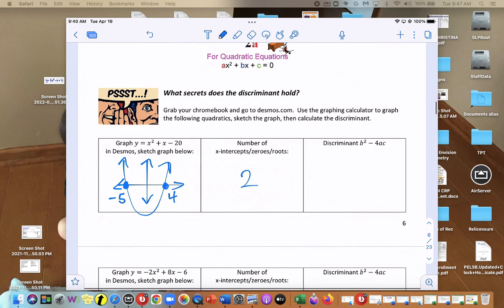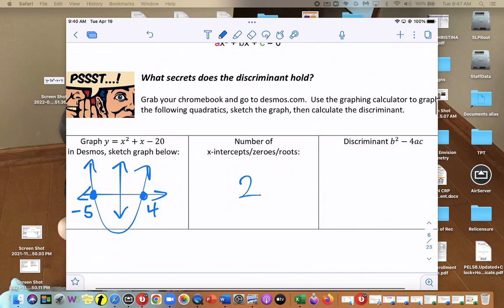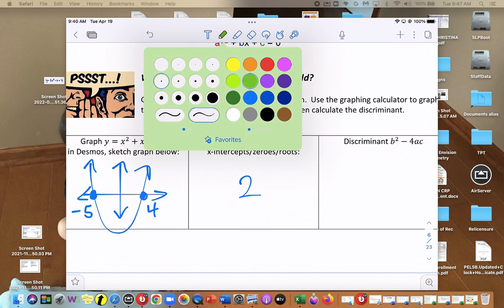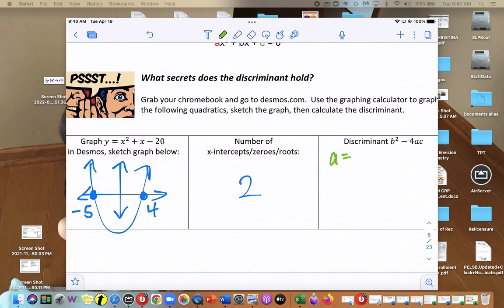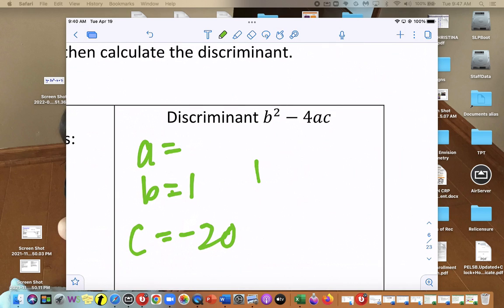And what is the discriminant b squared minus 4ac? So let's first label what a, b, and c are. So here a is 1, b is 1, and c is negative 20. So let's plug in to b squared minus 4 times a times c and get that number.